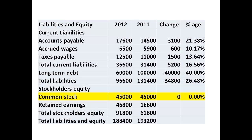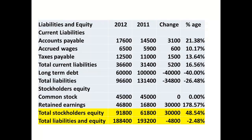There has been an increase in retained earnings of $30,000 or 178%. Together with the reduction in long-term debt, this suggests the business is doing well at the moment. In total, stockholders' equity has increased by $30,000, and there is only a small change in total liabilities and equity.